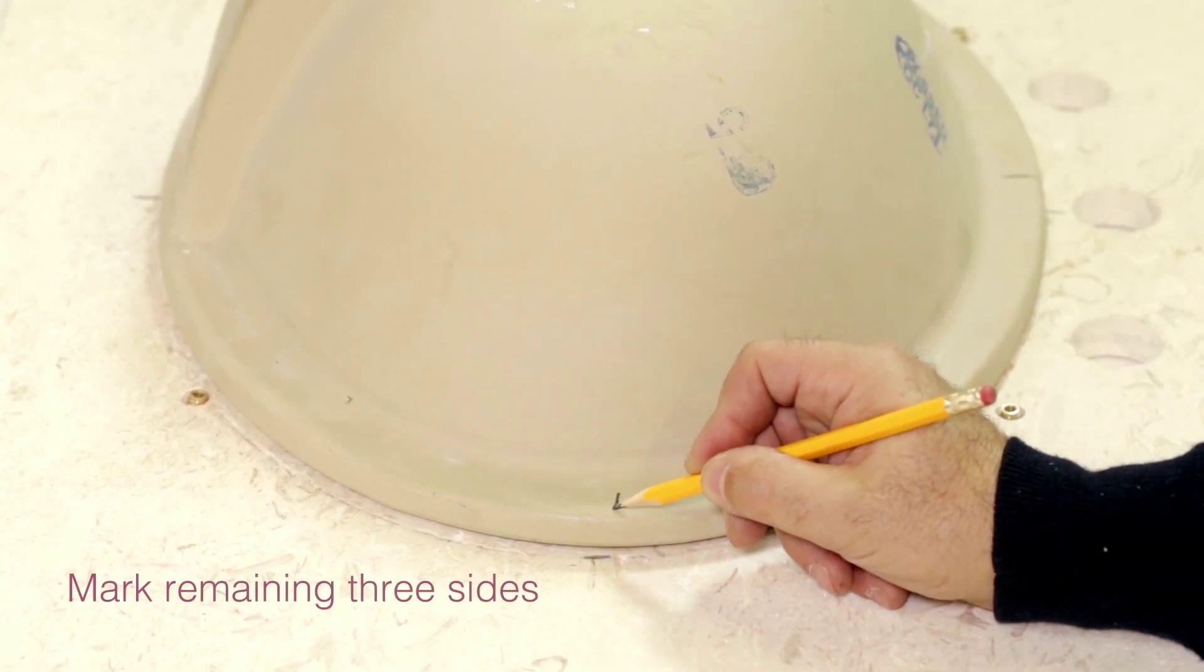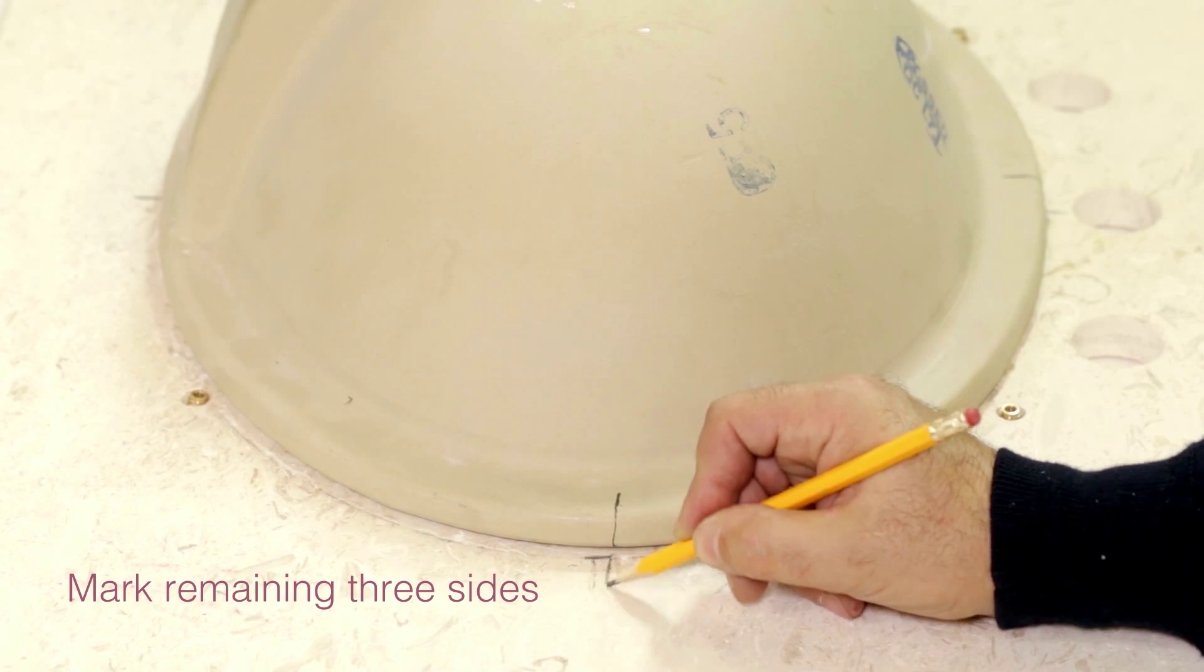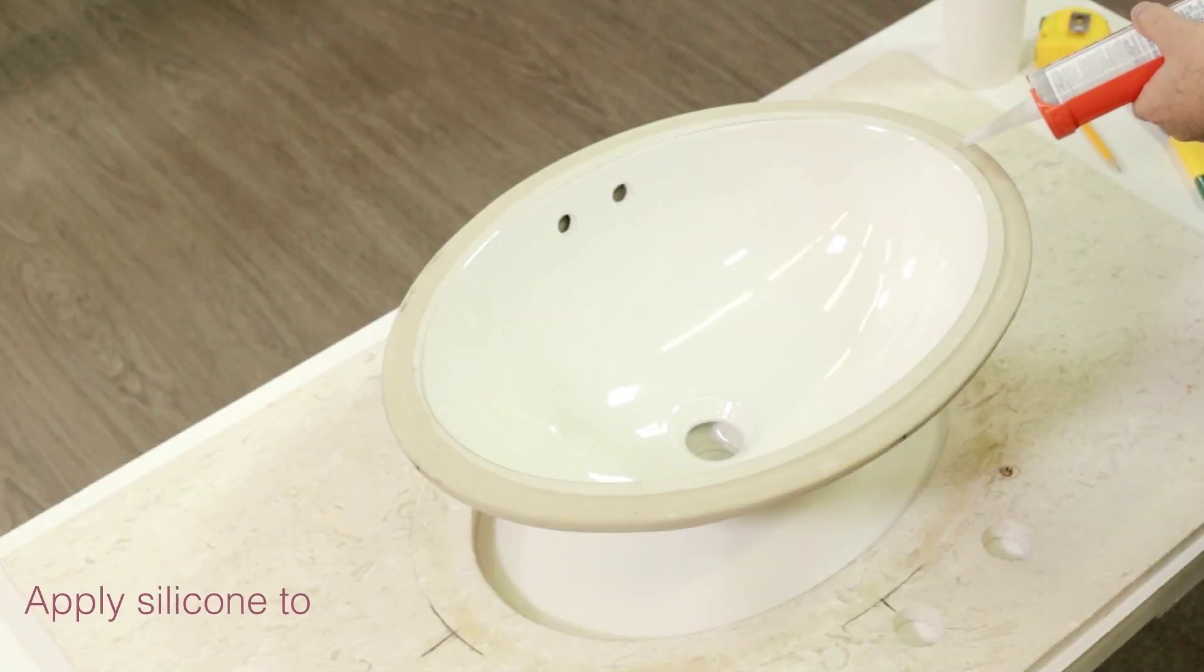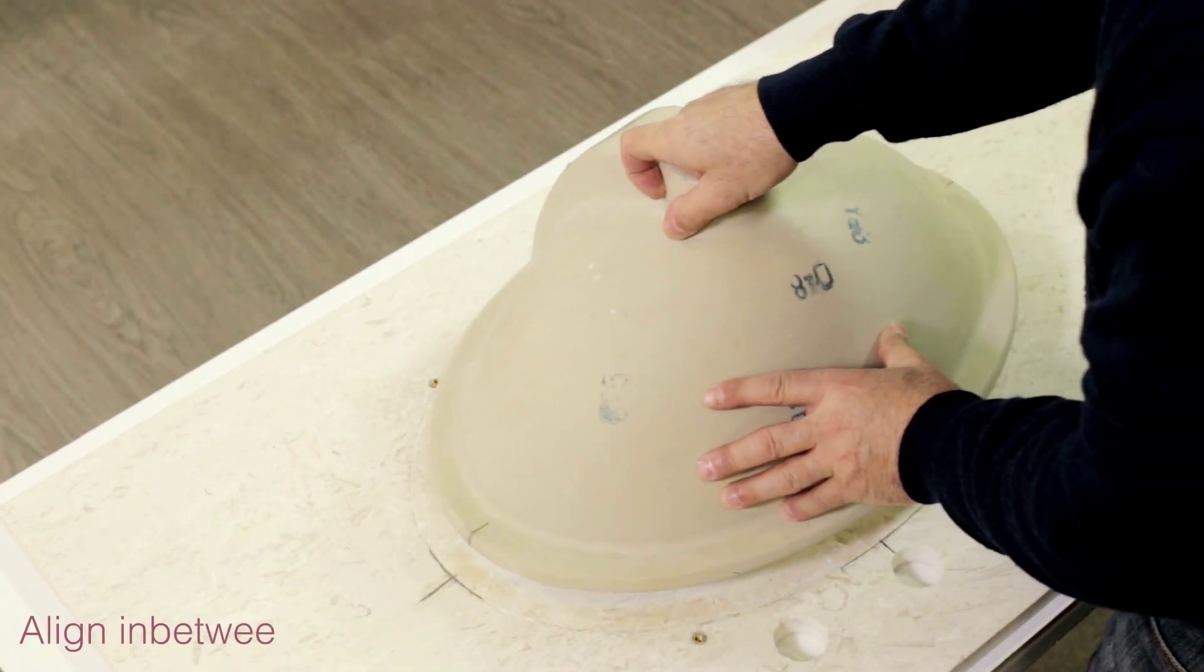Apply silicone to the groove in the sink. Gently position the sink onto the vanity top and align it in between the set marks.